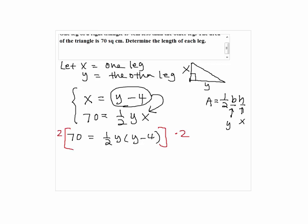We multiply both sides by 2 to eliminate the fraction, so we have 140 equals y squared minus 4y.